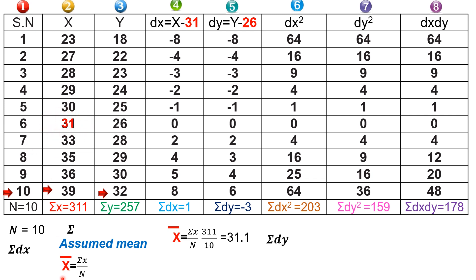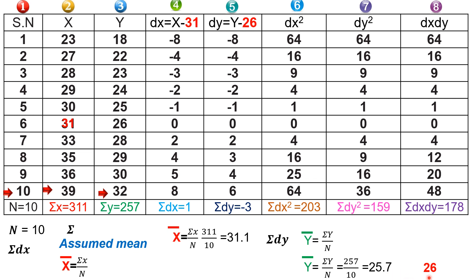Similarly, for y, the assumed mean is y-bar equals sigma y divided by n. Sigma y equals 257 and n equals 10, so 257 divided by 10 equals 25.7. We round this and take the assumed mean for y as 26. So our assumed means are x equals 31 and y equals 26.